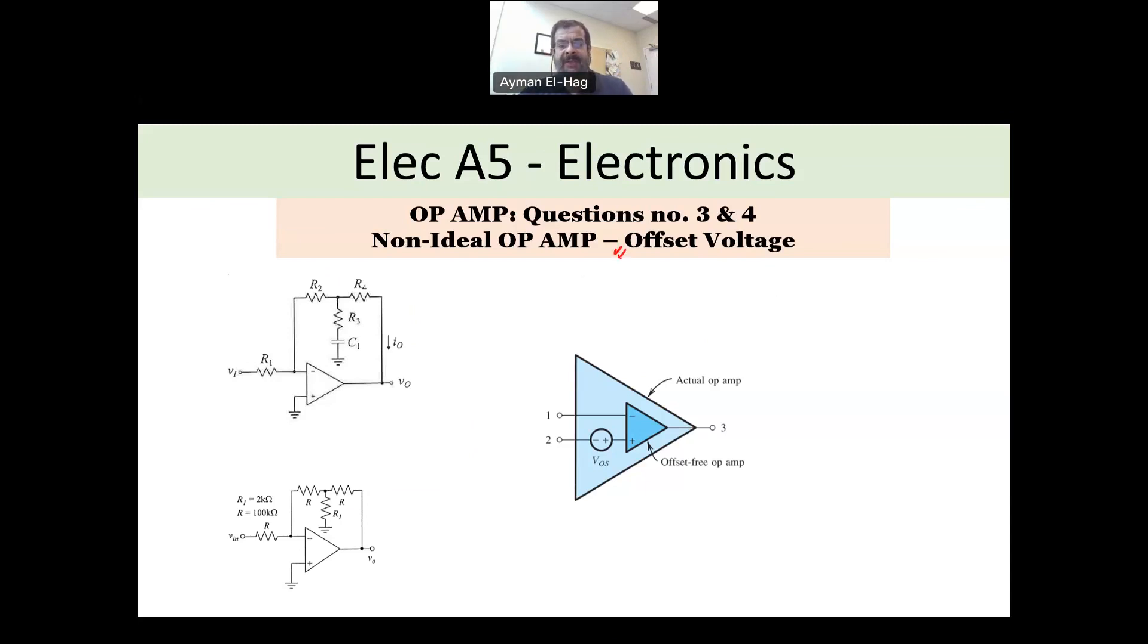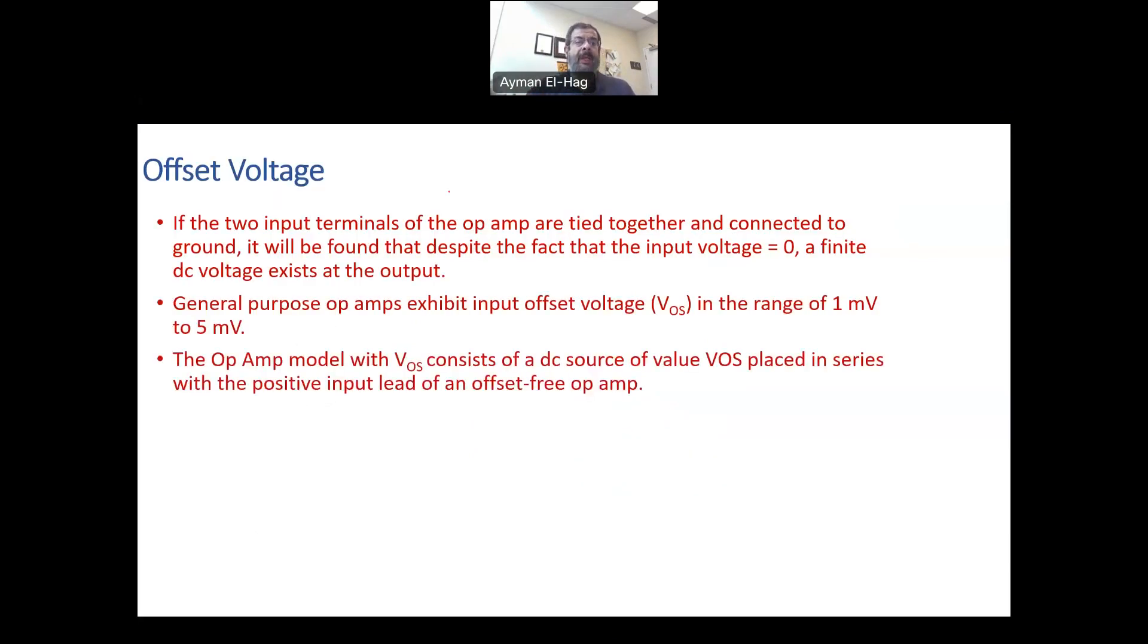So before we solve the examples, in one slide, I will try to shortly explain to you what is the offset voltage and how it can change our approach to the problem. So basically, if you have an operational amplifier, ideal one, and you connect these two to the ground, your Vout will be equal to zero. That is for basically an ideal operational amplifier. However,